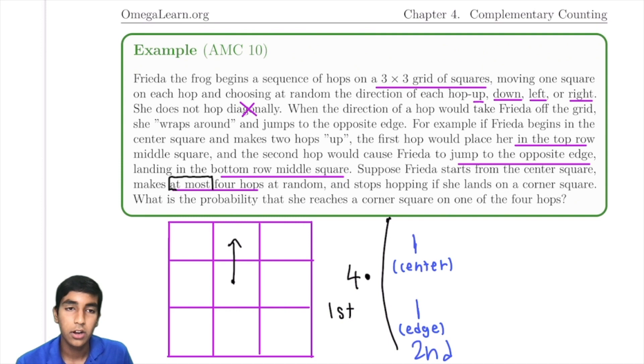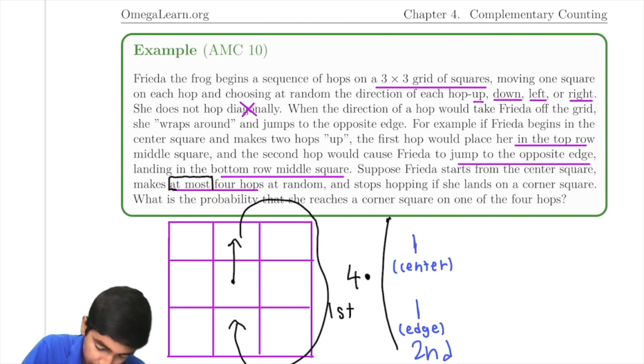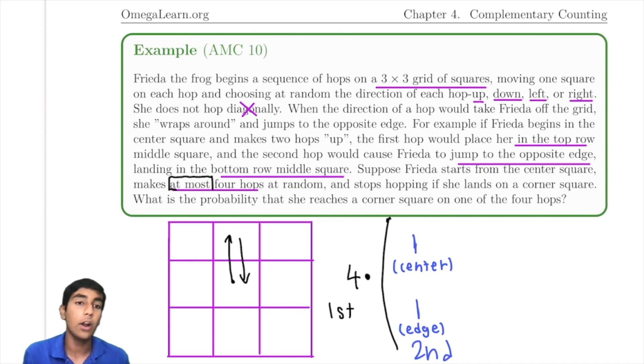So now we have two cases. Frida on the second hop goes to the center, or Frida on the second hop goes to another edge, in which case would be wrapping around. Let's take the first case. Frida goes back to the center. So Frida goes here, Frida goes back, and now Frida's back to the center. Frida, again, now has four choices, any of the four edges. So there's just four ways. And there's really no ways Frida can reach the corner from here.